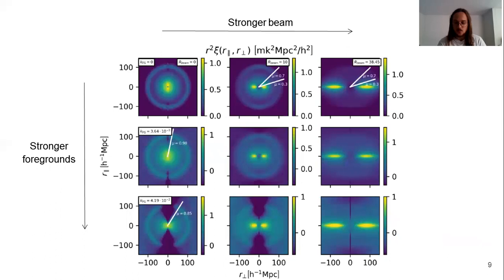Both observational effects will introduce anisotropy in the correlation function. Then, as I have said before, the anisotropic two-point correlation function is a perfect starting point in order to show those effects, those anisotropies. Here, we show nine plots,